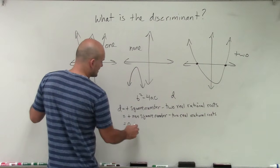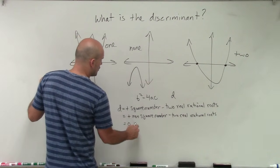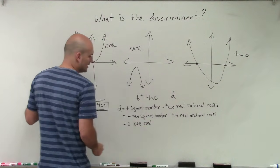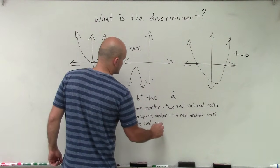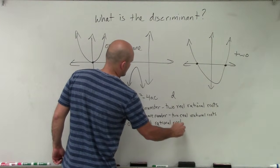So therefore, if we have 0, then what we're going to have is just, we're going to have one real rational root.